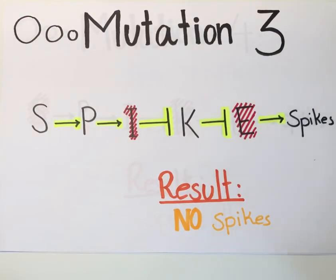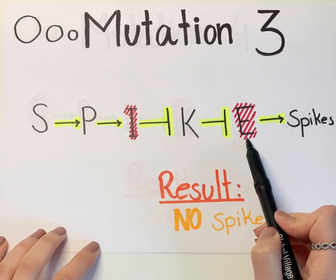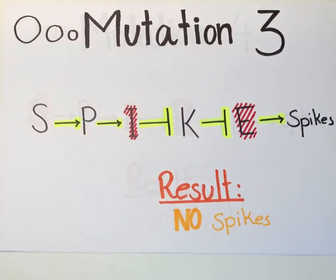In this third scenario, we have double mutations of I and E genes. Since at the end of every pathway you would normally need the E gene to get spikes, just the mutation of E gene is enough to result in a spikeless ectoderm cell. In short, if we lose E, we cannot activate spike formation.